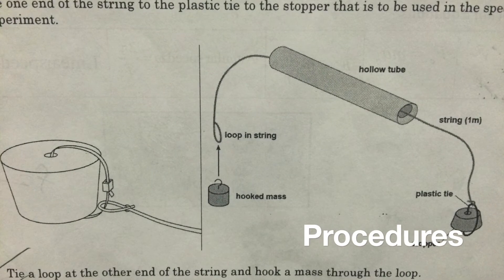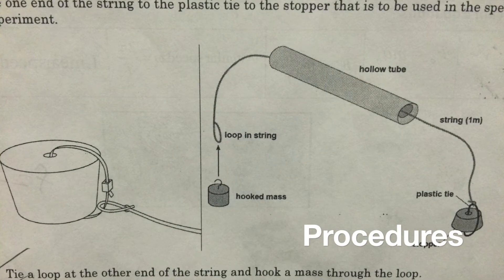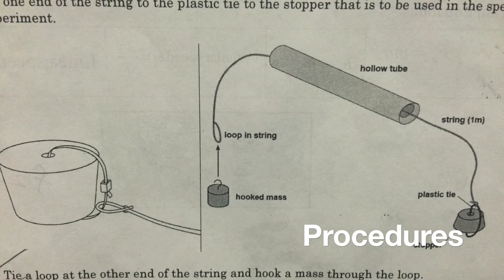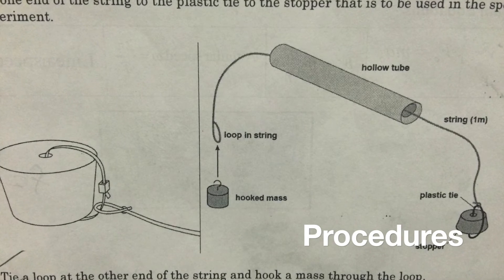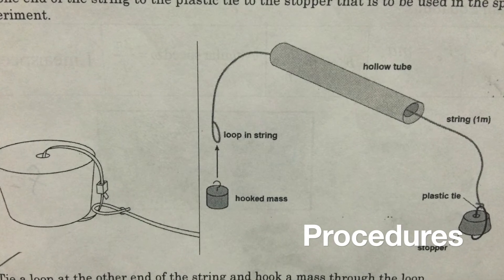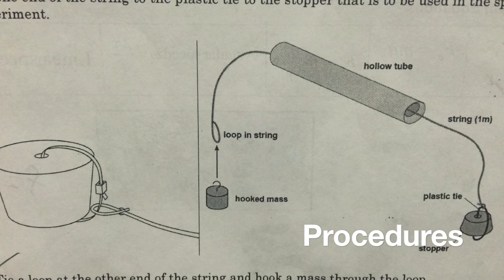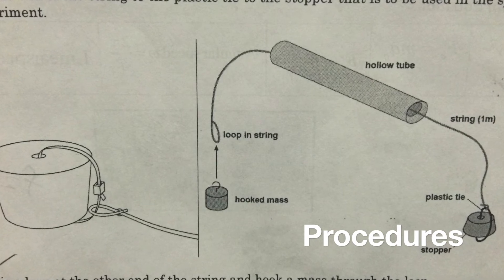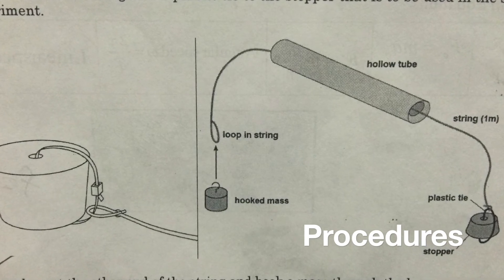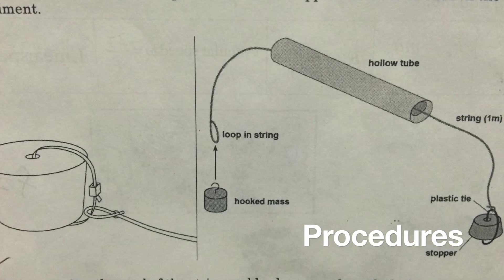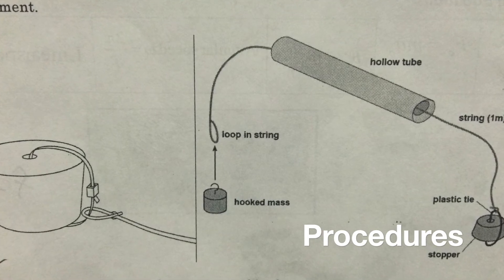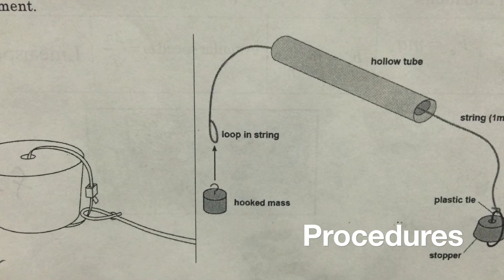First, cut a piece of string approximately 1 meter long and feed it through the hollow tube. Secure a plastic tie through the center hole in each stopper. Tie one end of the string to the plastic tie on the stopper that is to be used in a specific experiment. Tie a loop at the other end of the string and hook a mass through the loop.